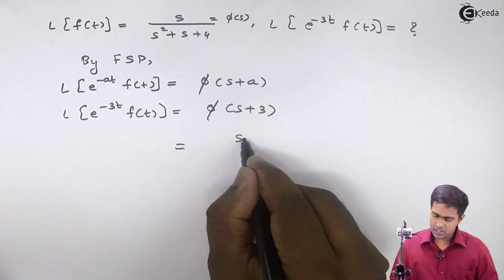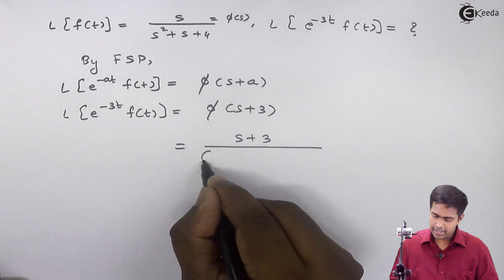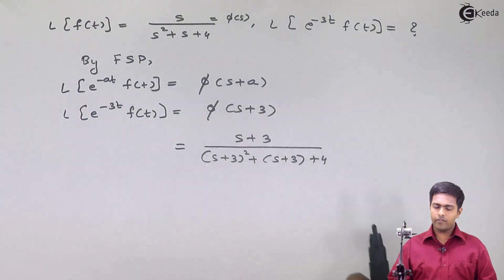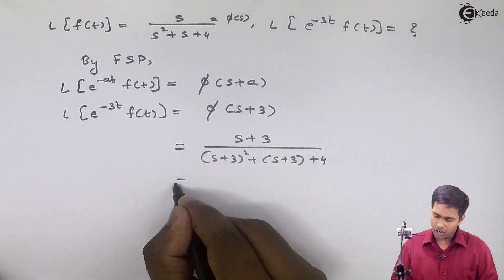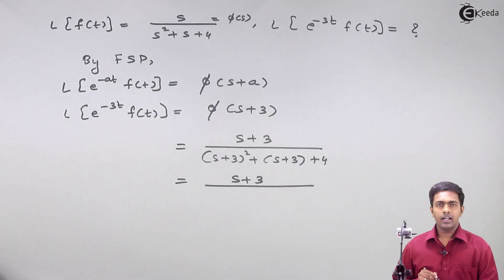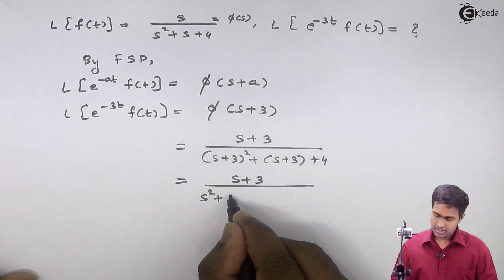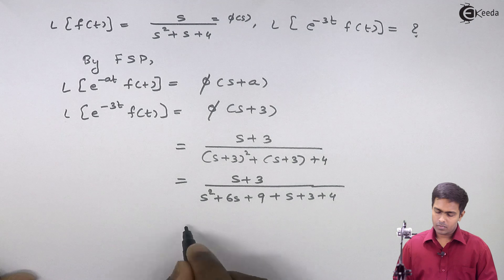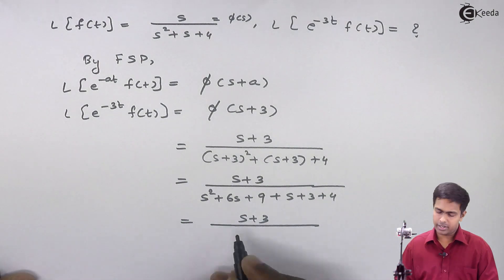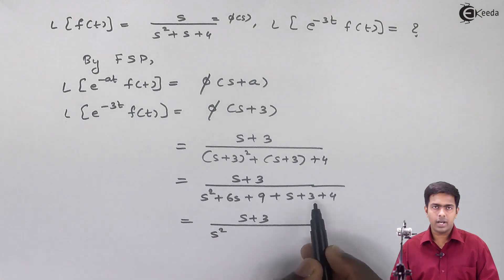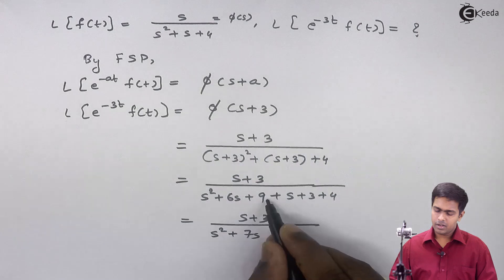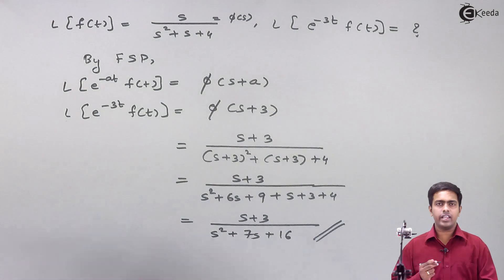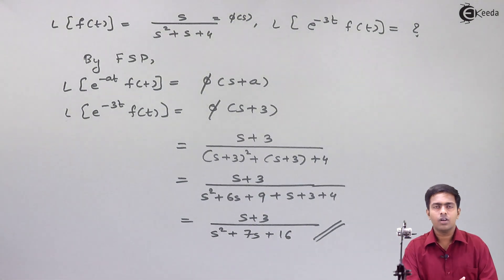Substituting, the numerator becomes s plus 3, and the denominator becomes (s plus 3) squared plus (s plus 3) plus 4. Expanding: the denominator gives s squared plus 6s plus 9 plus s plus 3 plus 4, which simplifies to s squared plus 7s plus 16. So the final answer is (s plus 3) divided by (s squared plus 7s plus 16), and this is the answer for the Laplace transform of e raised to minus 3t times f(t) using the first shifting property.